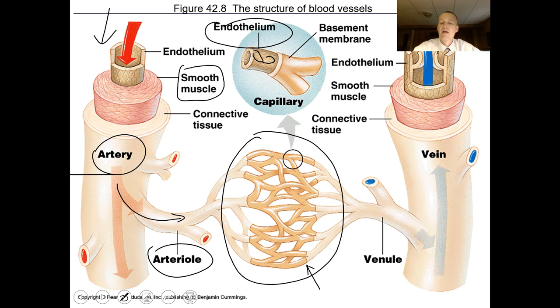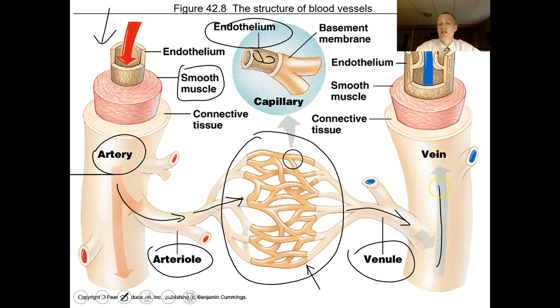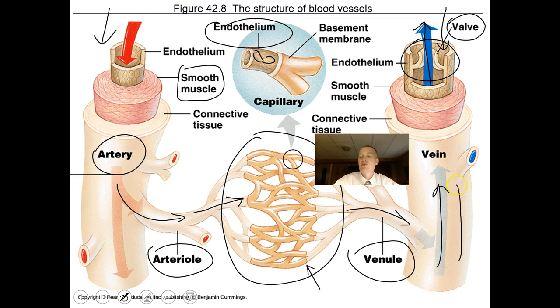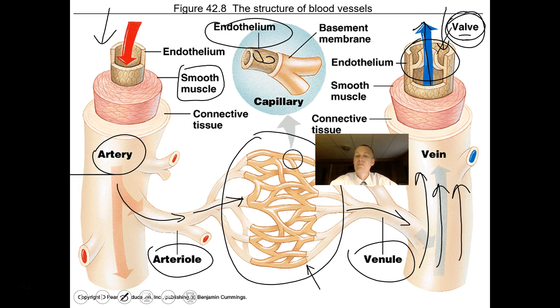A venule is the smallest vein. Blood flows out of the capillary bed into veins, which carry blood back to the heart. Veins have special structures called valves that ensure one-way flow — blood going back the wrong way pushes the valve shut. When those valves break down, you sometimes see varicose veins in the backs of people's legs.